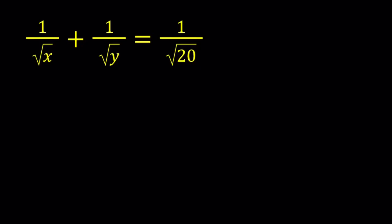Hello everyone. In this video, we're going to be solving a nice radical equation from Romania. We have 1 over square root of x plus 1 over square root of y equals 1 over square root of 20, and we're going to be looking for integer solutions. So this is a Diophantine equation.